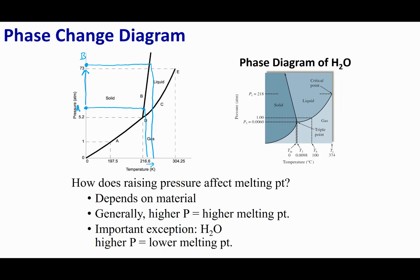But let's look at what happens with water. On the water diagram, I pick pressure A, find where I cross the solid-liquid barrier, and drop down. Then increasing the pressure to B, I see the opposite effect — for water, increasing pressure actually lowers the melting point. This is unique to water. Generally, higher pressure means a higher melting point, but water is an important exception.